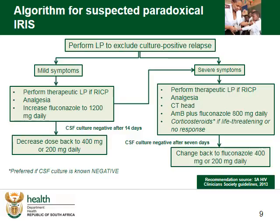On the other hand, in severely ill patients, you may have to request a CT scan to exclude space-occupying lesions and cerebral edema, and restart the patients on AmphoB and fluconazole 800mg whilst waiting for the results. Discuss with a consultant whether steroids could be of use, but preferably wait until you have a confirmed negative culture, unless the patient's condition is life-threatening. The culture result will dictate further treatment options. If the culture is negative and adherence is good, that confirms it was most likely a paradoxical IRIS, and fluconazole can go back to 400 or 200mg depending on the phase of treatment the patient was in when worsening occurred.